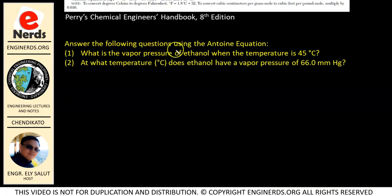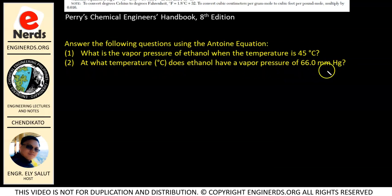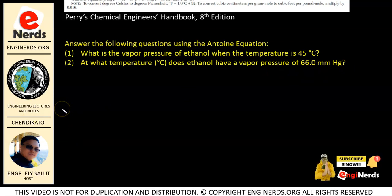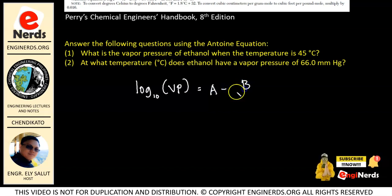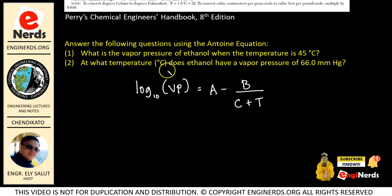In order to really understand how to use this, let us solve this problem here. Answer the following questions using the Antoine equation. Number one: what is the vapor pressure of ethanol when the temperature is at 45 degrees Celsius? Number two: at what temperature in degrees Celsius does ethanol have a vapor pressure of 66 mmHg? Let us start by writing our Antoine equation so we will not get confused. Antoine equation is: log base 10 of our vapor pressure is equal to A minus B over C plus temperature. Remember that our vapor pressure is in millimeter mercury and our T is in degrees Celsius.